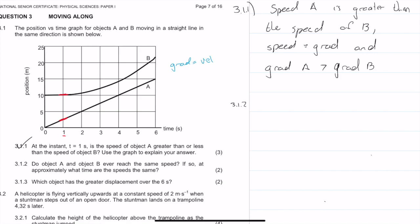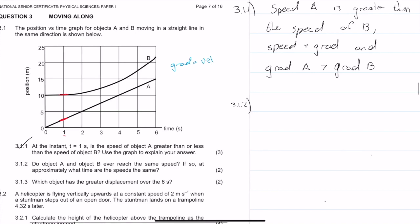Question 3.1.2: Does object A and B ever reach the same speed? If so, when? Basically now we're looking for where these two things have the same gradient. I would say pretty much at this point right here. The gradients at about T equals 4 seconds looks the same to me. In the section after that, B looks greater, and in the section before that, B looks like it's less. So I would say yes, they do reach the same speed, and that happens at 4 seconds.